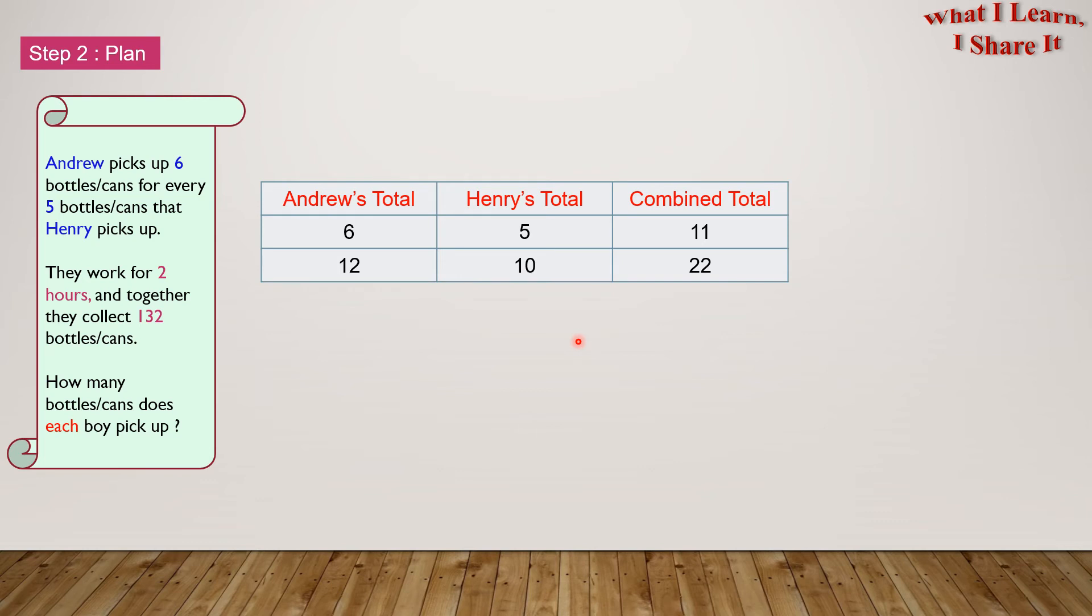Let's do it for the next time. 12 plus 6 equals 18 for Andrew, 10 plus 5 equals 15 for Henry, 22 plus 11 equals 33 for the combined total. And now we've added this to our chart. Wow! I think this plan is going great! In this way, we will work from the combining total to go to 132.